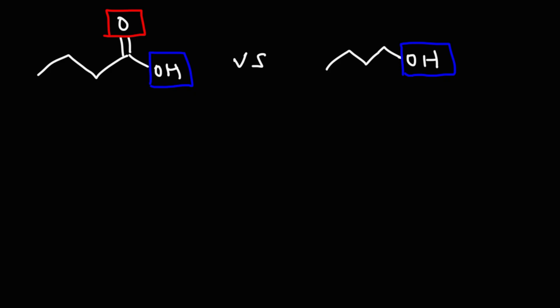The carboxylic acid has a carbonyl group as well. So the carboxylic acid has two polar groups, the carbonyl and the hydroxyl group. So therefore, the carboxylic acid is going to be more soluble in water than the alcohol. Notice that the carboxylic acid can form more hydrogen bonds with water than the alcohol can.